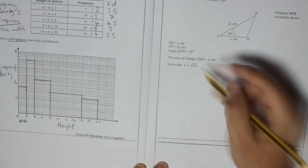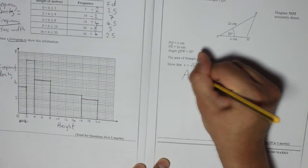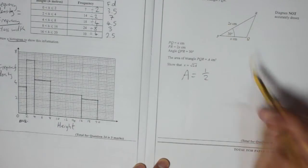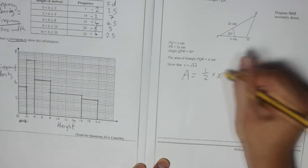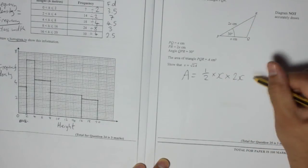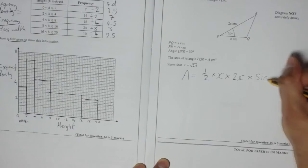So in our case, A, the area, is equal to half, two sides times each other, so times by x, times by 2x, multiplied by sin of the angle in between, 30.